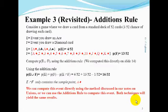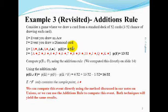Let's revisit example 3. For this example, we had a game where we drew a card from a standard stack of 52 cards. We defined E as the event that we draw an ace, and F is the event that we draw a diamond card. We specify all of the sample points in E, and computed that the probability of E is equal to 4 over 52. We have all of the sample points contained in the event F, and the probability of F occurring is 13 over 52.